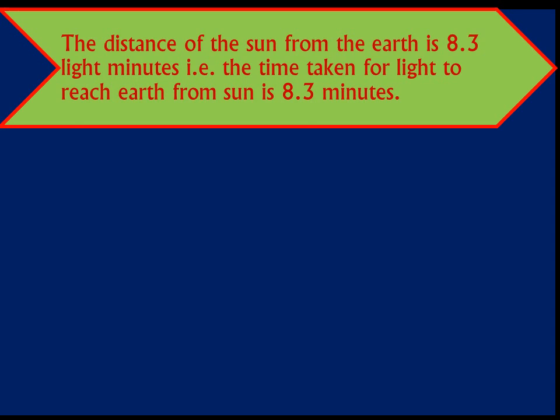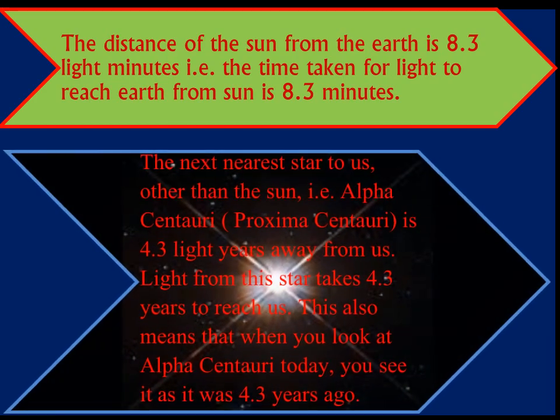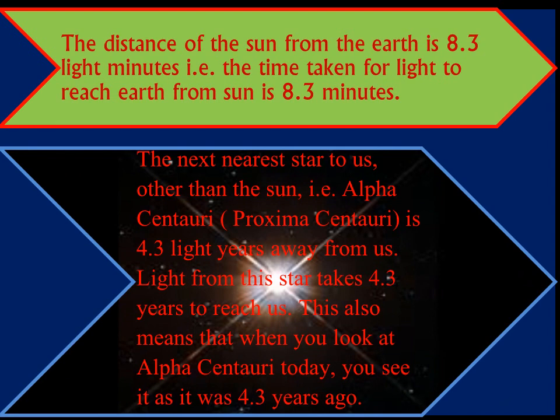We can define this in another way. You learned in your previous class that we see an object only when the light emitted or reflected by it reaches our eyes — the light ray entering the eye forms an image there. Therefore, you see the image of the sun only when a light ray from the sun reaches your eyes. But this light ray takes 8.3 minutes to reach here from the sun. So when you see the sun, you are actually seeing its image from 8.3 minutes back — a past image. For example, if you see the sun at 9 a.m., you are getting its image from around 8:52 a.m.